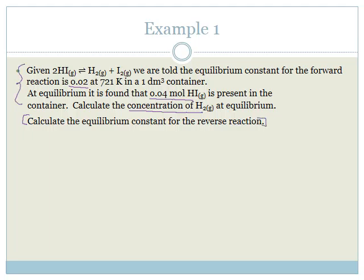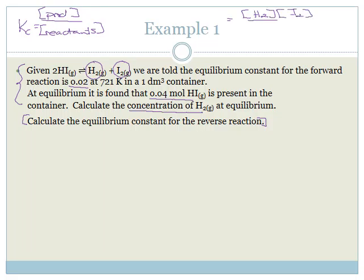Let's do this bit first. KC is the concentration of the products over the concentration of the reactants. In this case the products are hydrogen and iodine, so it's the concentration of H₂ times the concentration of I₂, over the concentration of HI squared. Remember, whatever number is in front comes to the power, so it becomes squared.